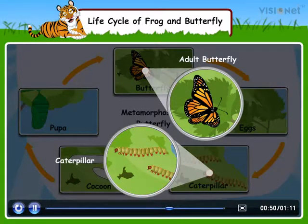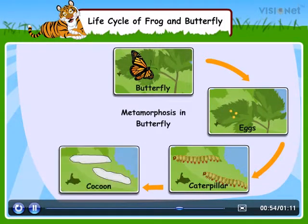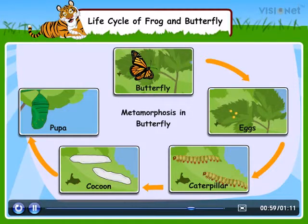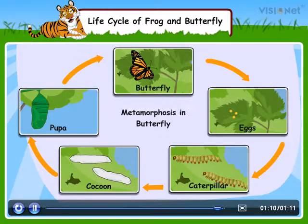This caterpillar is also called a larva. The caterpillar builds a cocoon around itself. The next stage is the pupa. It sheds its skin many times and then finally transforms into an adult butterfly. The process of shedding the old skin is called molting.